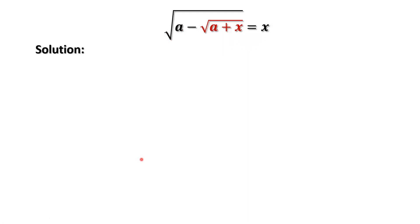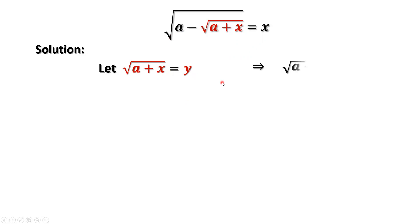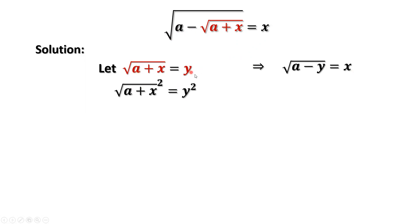We are going to introduce a special method to solve this equation. First, let's define square root of a plus x equals y. Then we have square root of a minus y equals x. We take squares on both sides of this equation, then we have a plus x equals y squared. This is our first result.